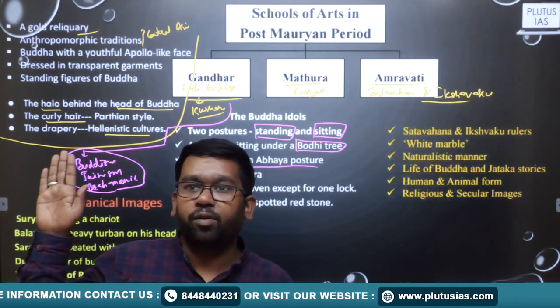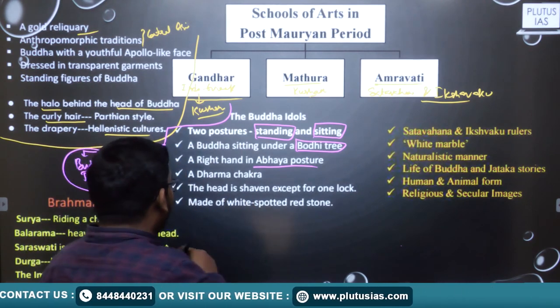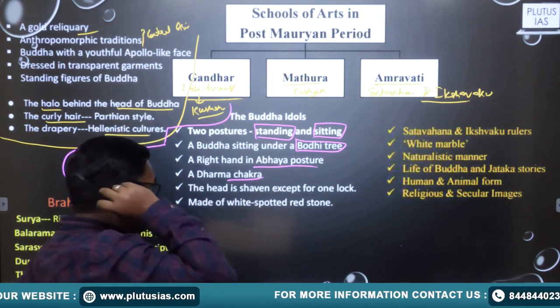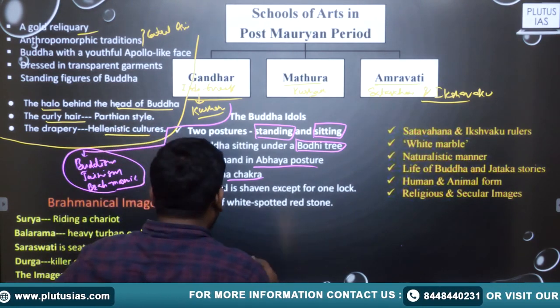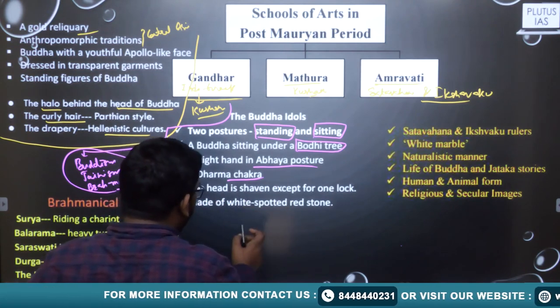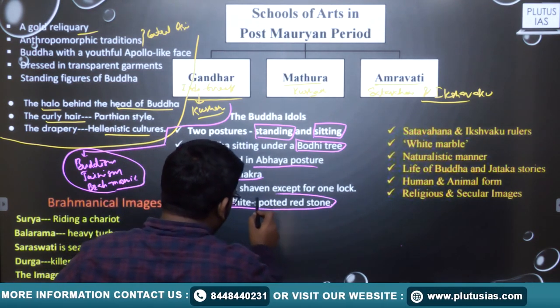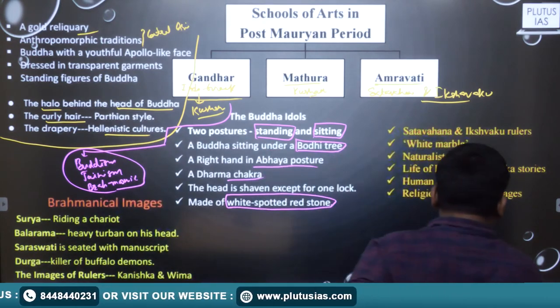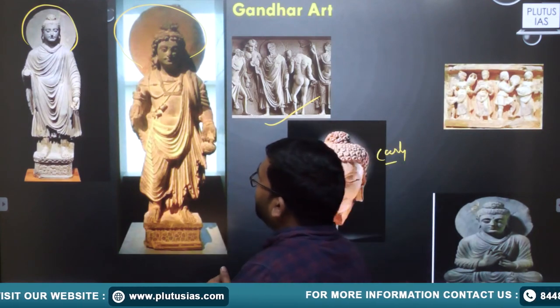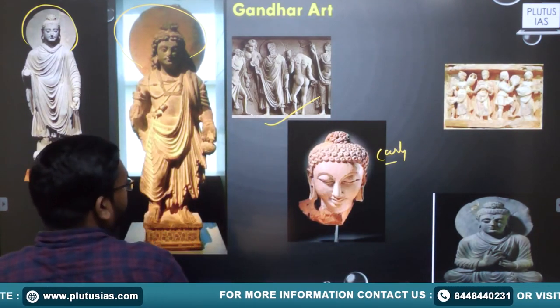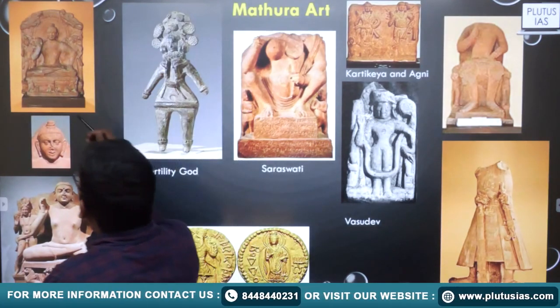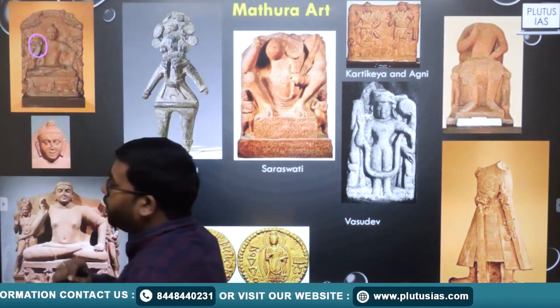In the Mathura school, Buddha is giving blessings to the people. We also find a Dharma Chakra. The head is shaven. The sculpture was basically made of white-spotted red stone. These are the examples where Buddha is seated in Abhaya posture, giving blessings to the people.